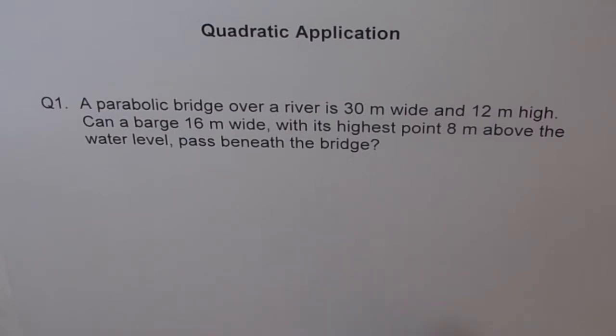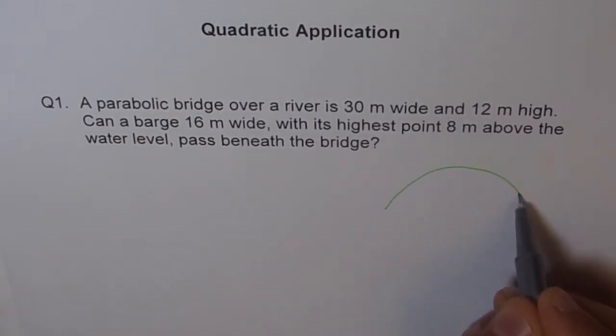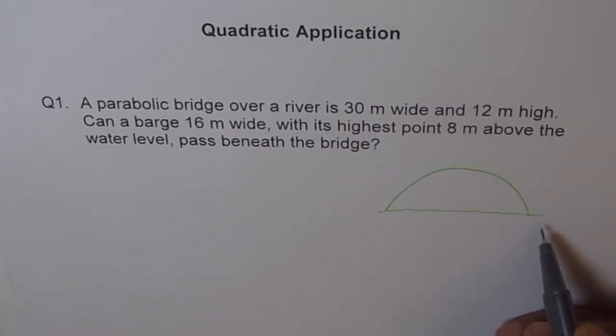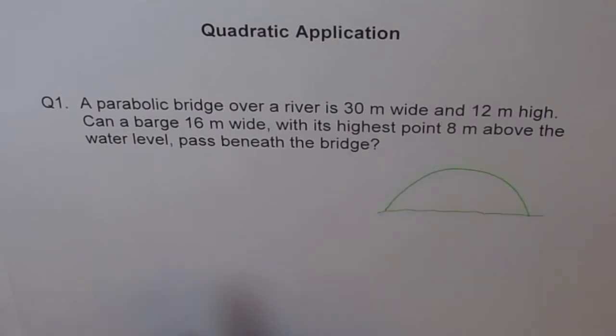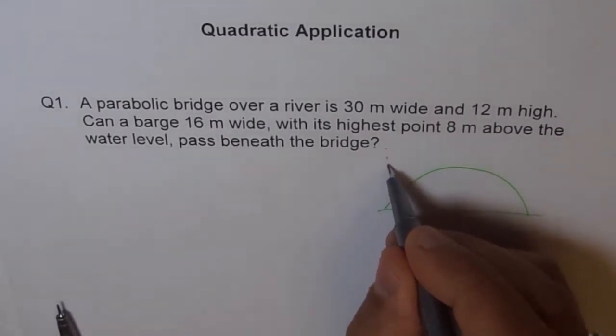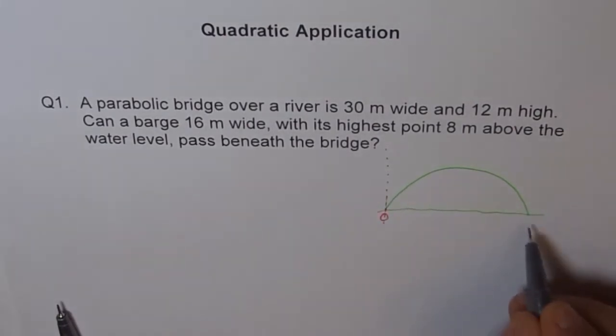So we have a bridge here. Let me first sketch the diagram for you, it helps us to understand. Let's say this is a bridge, and that's a river. Now, this bridge is 30 meters wide, so let me draw the axis here.